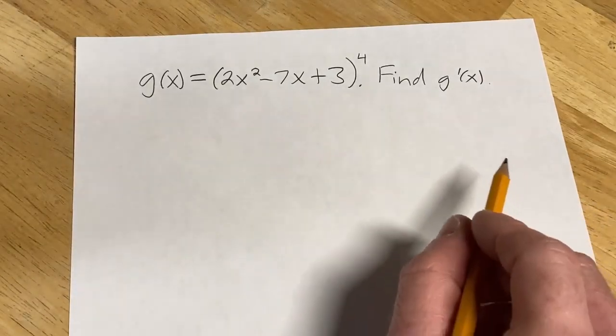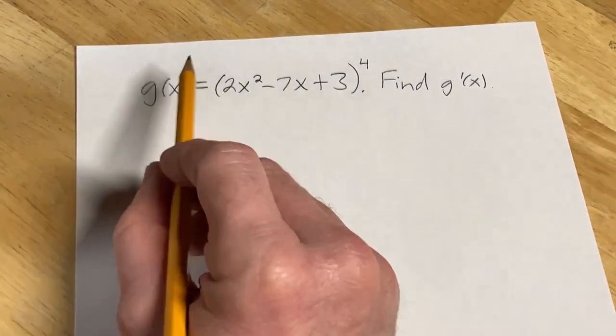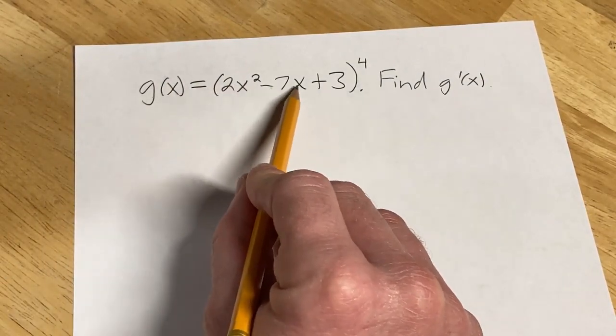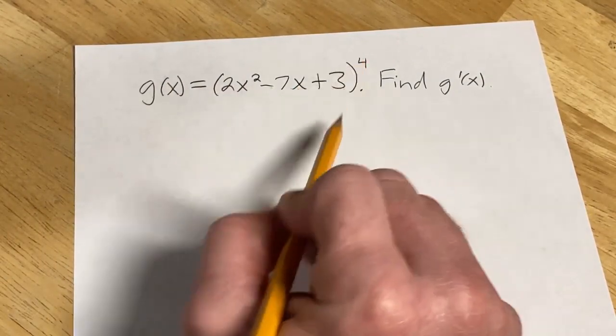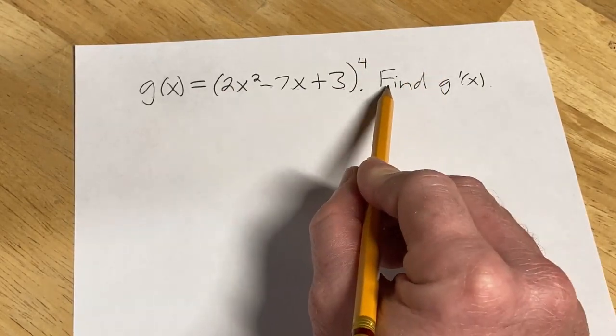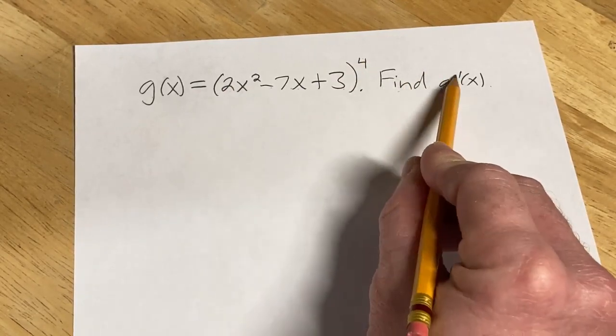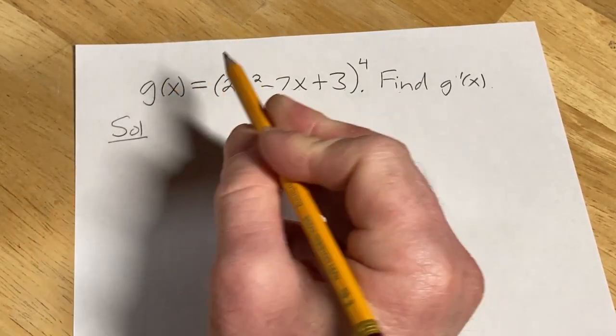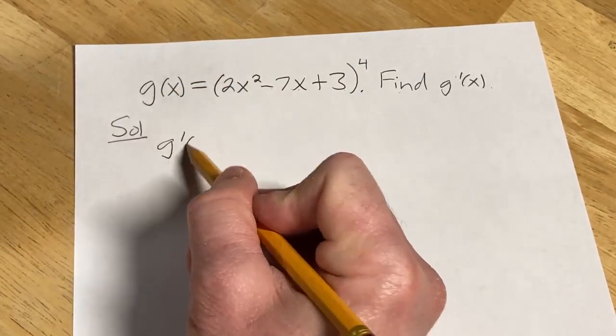Hi, in this video we're going to do an example of a derivative. We have a function g(x) = (2x² - 7x + 3)⁴, and the question is to find g'(x). Let's go ahead and work through it. Solution: g'(x)...